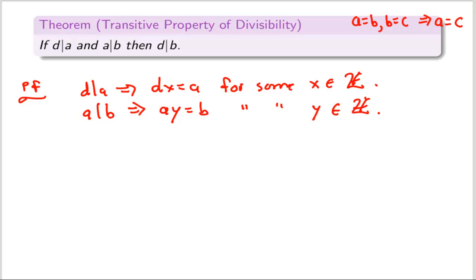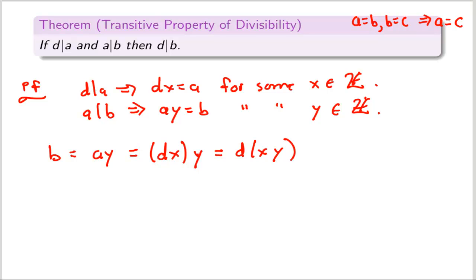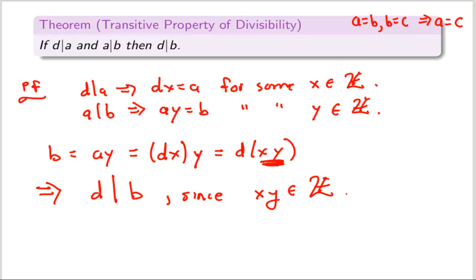A divides b means that ay equals b for some integer y. We're trying to prove that d is a divisor of b, so I want to show b is a multiple of d. Starting with b: b equals ay, and a equals dx, so substituting in dx for a gives b equals (dx)y. Using the associative law, b equals d times (xy). And so d is a divisor of b since xy is an integer — because x and y are integers and the integers are closed under multiplication.